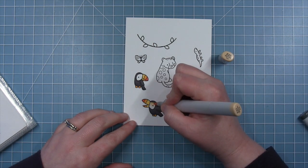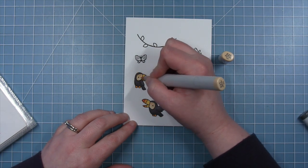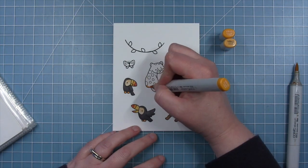Then I'll go back in with that same E21 I used on the monkey's face to color in the part where his eye is.